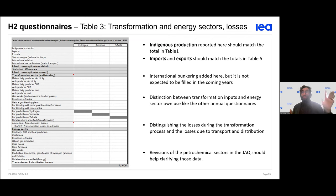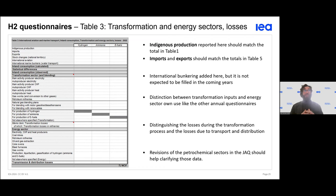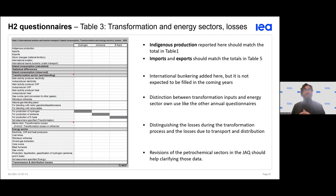The transformation and energy sector section is also complex. The first row lists the consumption, and we also include the quantity of hydrogen used to produce ammonia or other products. This should also be reported.